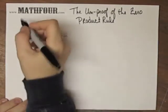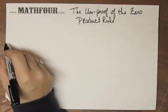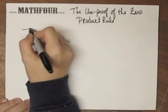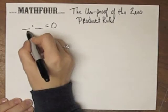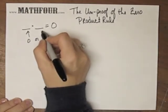This is the un-proof of the zero product rule. So the zero product rule, fancy schmancy, says if I have any two numbers that equals zero, then that's zero, or that guy is zero.